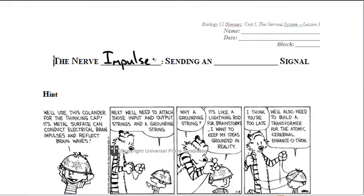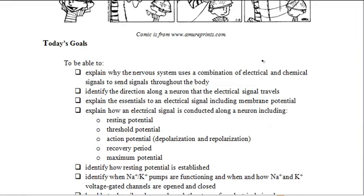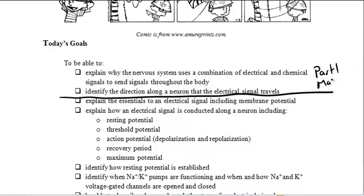In particular, we're going to talk about sending an electrical signal. Part 1, which will be mandatory, will cover the first two learning objectives, including understanding why we have a combination of electrical and chemical signals in our nervous system, and identifying how the electrical signal travels along a neuron. That's Part 1, mandatory. And then Part 2, unless you are away, we will cover in class and is optional. We'll cover the learning outcomes listed here.